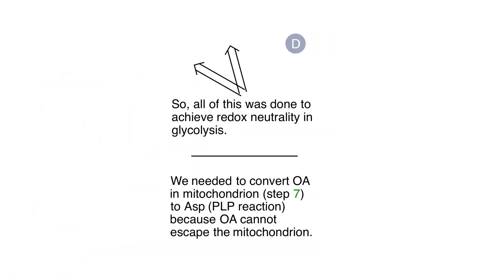In Panel D, I summarize that we've looked at three different small pathways that enable the cytoplasm of the cell to always have enough NAD+ to oxidize glucose to pyruvate. These pathways are: first, the lactate dehydrogenase system; second, the glycerol-3-phosphate shuttle; and third, the malate-aspartate shuttle.